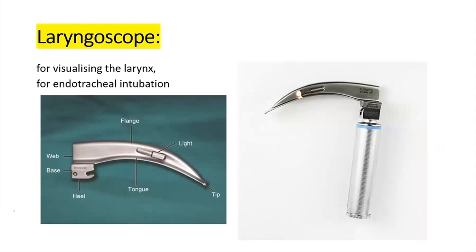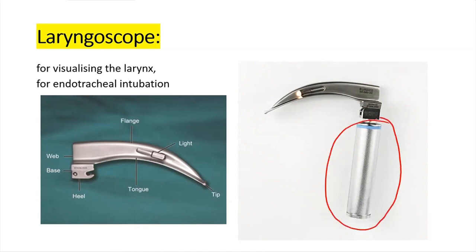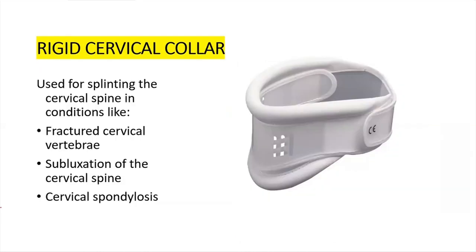The laryngoscope is used to visualize the larynx and during endotracheal intubation. It has two parts: the blade and the handle. The handle is where you insert your batteries, and the blade has a light source.